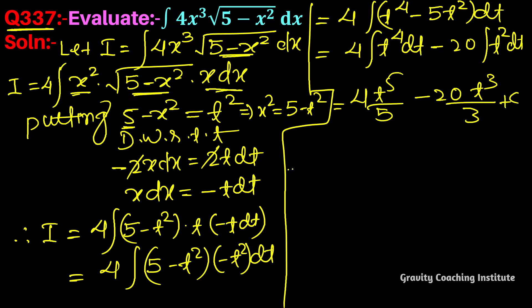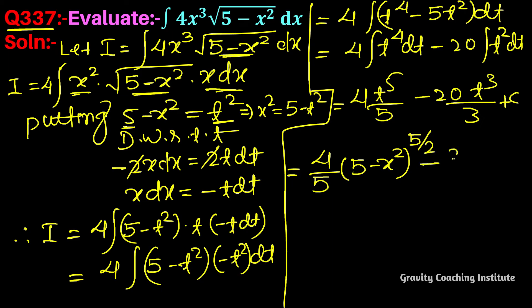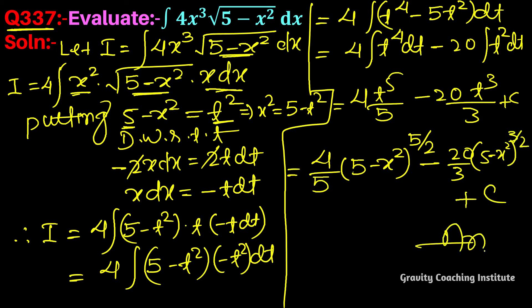Integrating and substituting back the value of t, where t² equals 5 minus x², the final answer is: 4/5 into (5 minus x²) to the power 5/2 minus (5 minus x²) to the power 3/2 plus C.